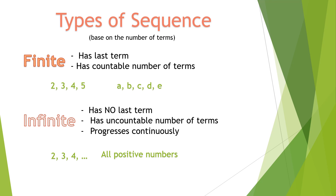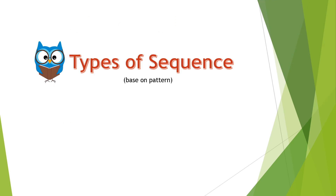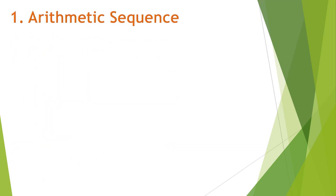Aside from the types of sequence based on the number of terms, we also have types of sequence based on pattern, and this time we have four classifications. The first one is known as the arithmetic sequence. For today, I'll be using a simple description: a constant value is added for the progression of the sequence.